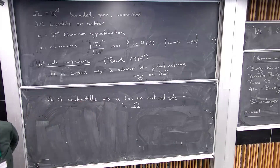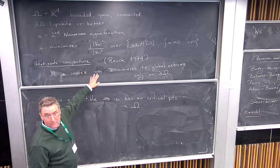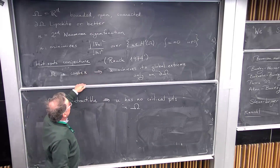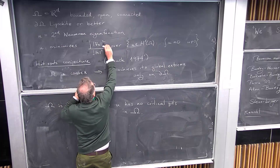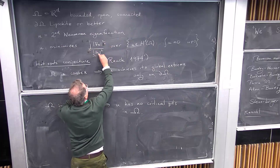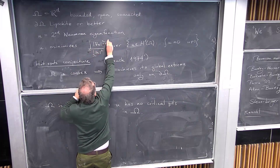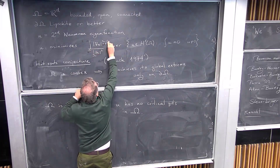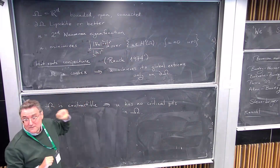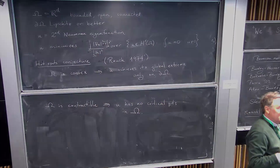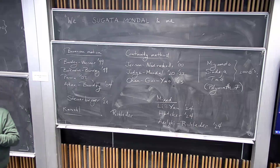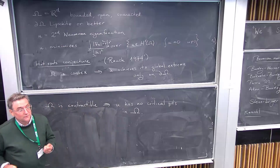Another thing to notice: if you consider Robin problems — adding a boundary term alpha times u on the boundary of Omega with alpha positive — then the hot spots conjecture is false immediately. So it's sensitive to perturbation: if you change the quadratic form even slightly, it's no longer true.